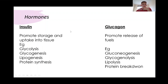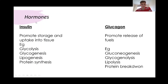To summarize hormones: insulin promotes storage and uptake into tissues — so glycolysis, glycogenesis, lipogenesis, and protein synthesis. Whereas glucagon promotes the release of fuel — so gluconeogenesis, making new glucose to be used; glycogenolysis, breaking down glycogen to allow glucose to be used for energy; lipolysis, using lipids for energy; and protein breakdown. These hormones work in balance, inhibiting and promoting each other to get the right balance in the body. Obviously if one of them isn't working, such as insulin in diabetes, we can see how this can be problematic.